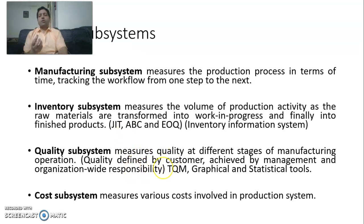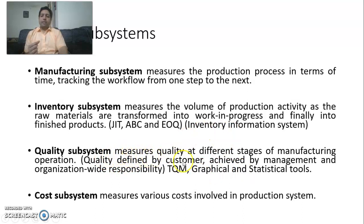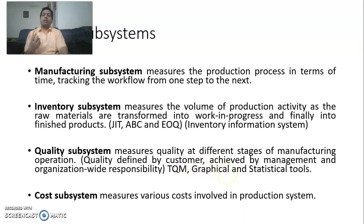There is also the concept of Economic Order Quantity — how to order, when to order, and how much to order to make it most cost efficient. The inventory information system gives insight on this. The quality subsystem measures quality at different stages of manufacturing operations. Quality is defined by customers, achieved by management, and is an organization-wide responsibility. Total Quality Management, or TQM, is a key term here, and there are graphical and statistical tools used in quality management.